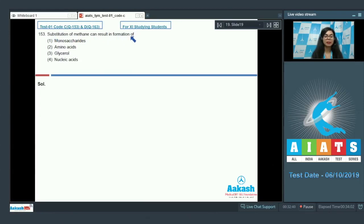Question 153: Substitution of methane can result in formation of monosaccharides, amino acids, glycerol, or nucleic acid. Methane has one carbon atom and four hydrogen atoms. Monosaccharides are three to eight carbon molecules. Amino acids usually have one alpha carbon which has four different components: R group, carboxylic group, amino group, and hydrogen.